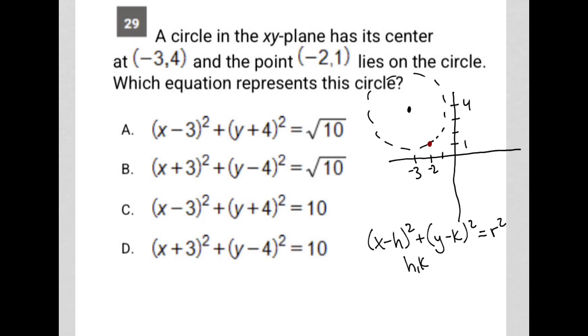So (h, k) here represents the center of the circle. The center of the circle was provided - we know it's (-3, 4), which means we should have (x + 3) because if I plug in -3 for h, I'd have a minus negative 3, so that's plus 3.